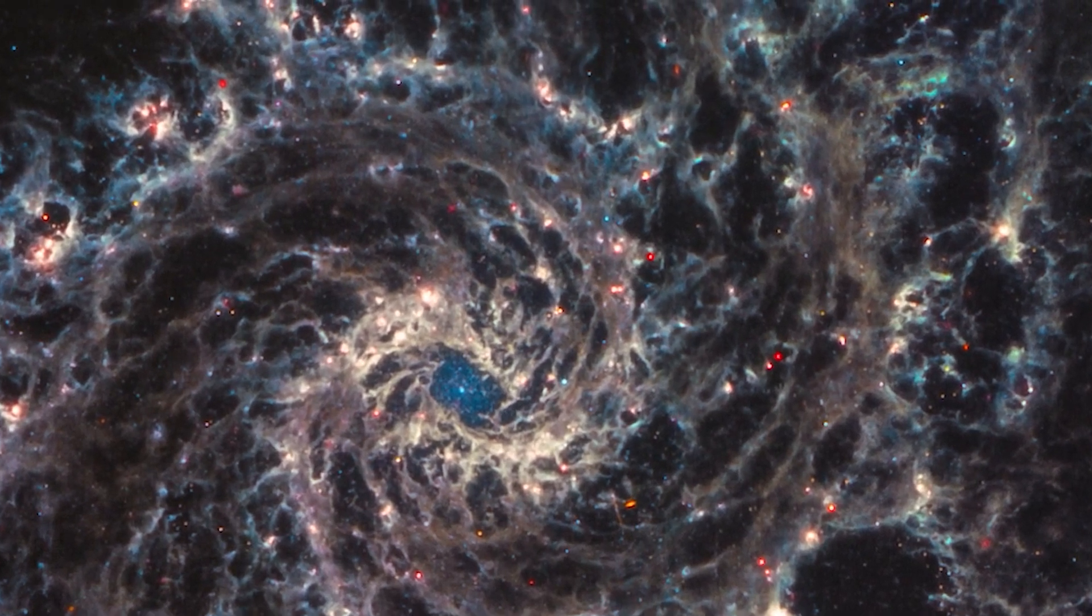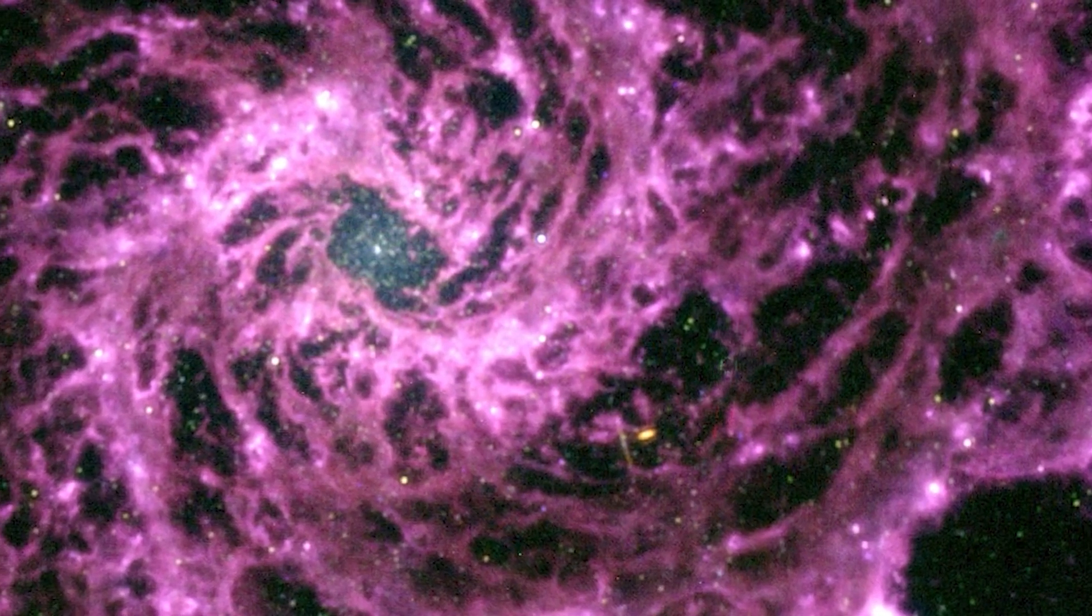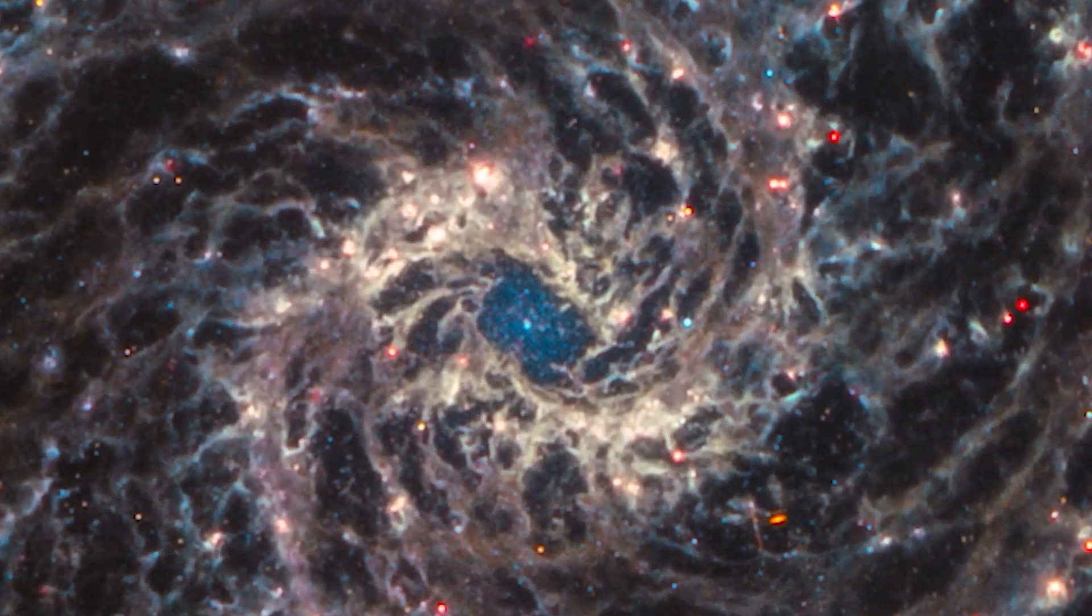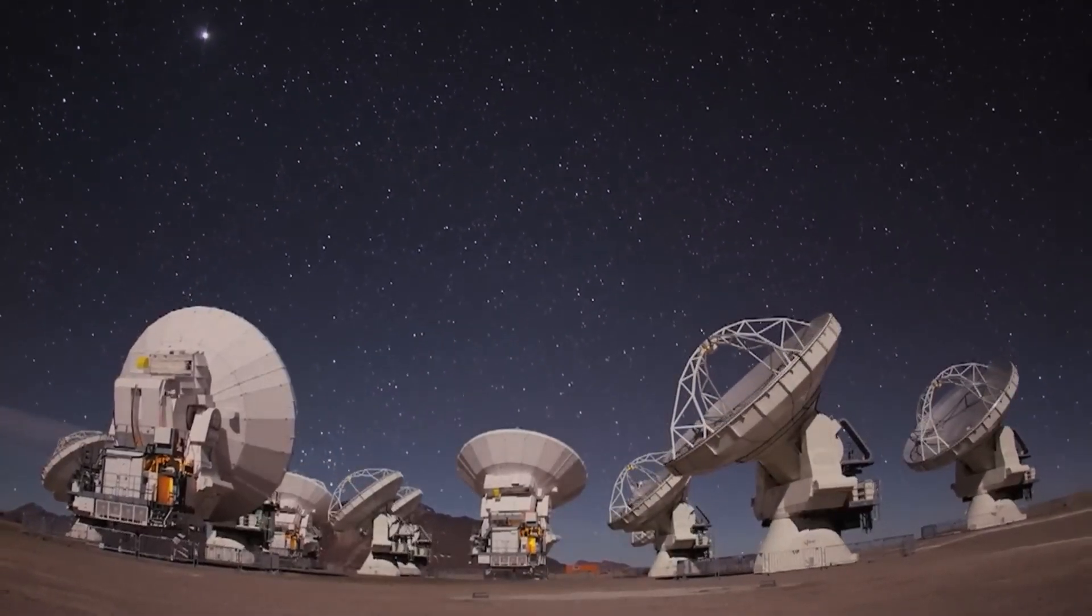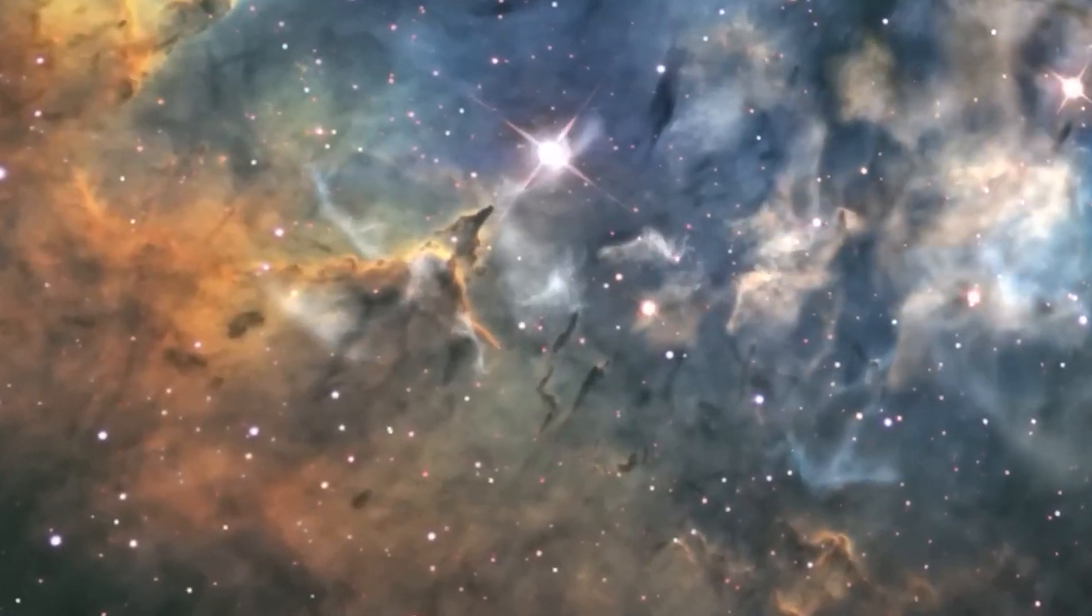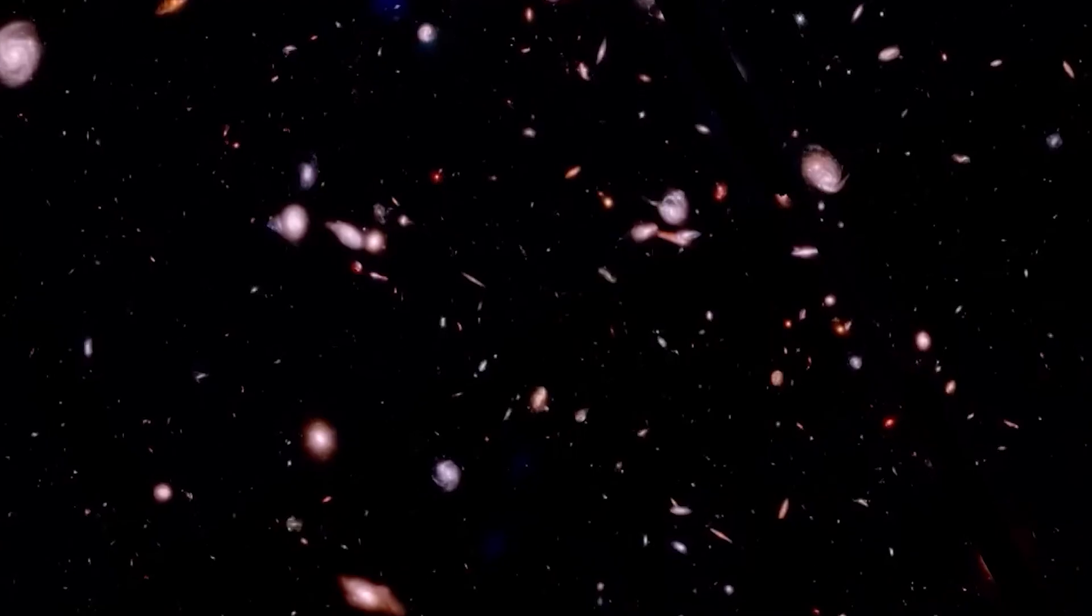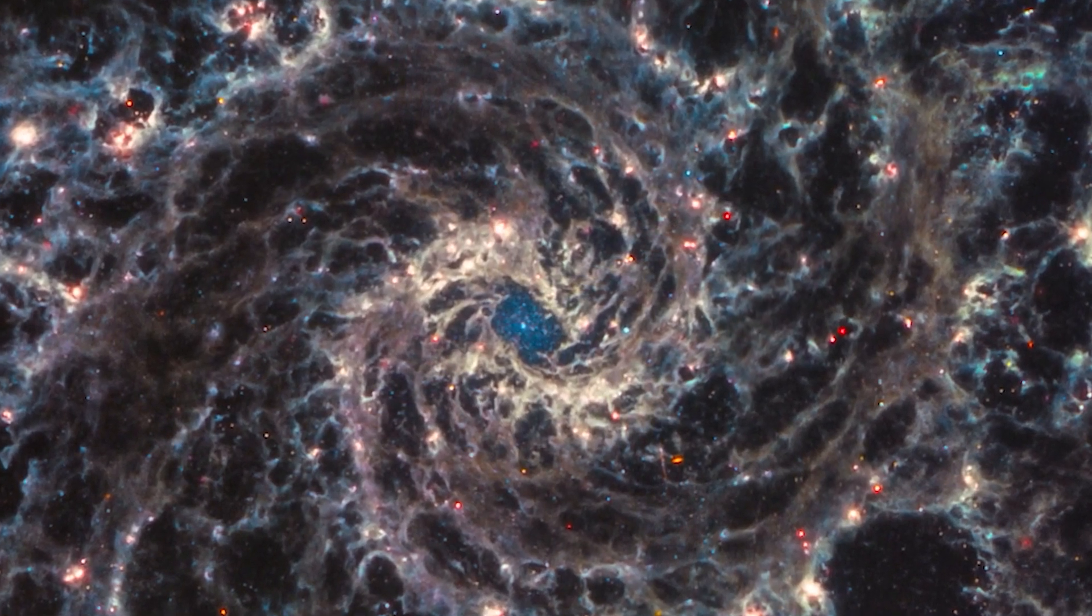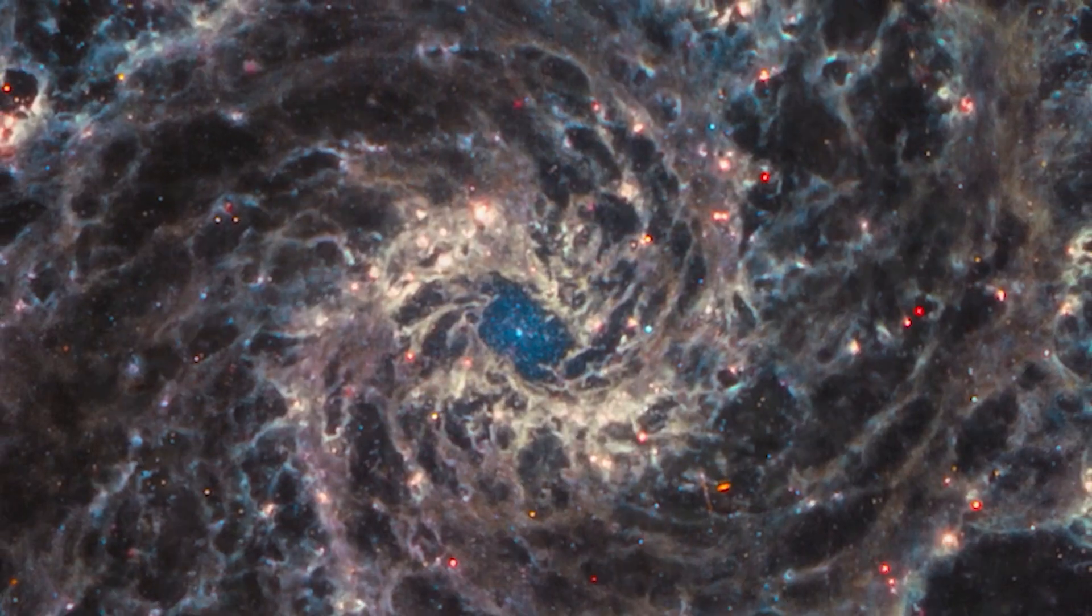This incredible celestial wonder, situated about 32 million light-years away, looks like a swirling nautilus shell in space. Its spiral arms, which are exceptionally prominent and well-defined, create a captivating visual display that has captivated astronomers and space enthusiasts. As scientists study the intricate structure of this galaxy, they gain valuable insights into the dynamics of spiral galaxies. The Phantom Galaxy is a testament to the beauty and complexity that exists beyond our own planet, inviting us to ponder the wonders that lie in the depths of space.